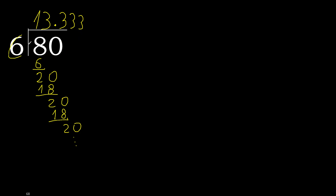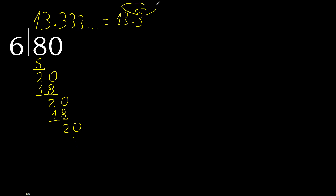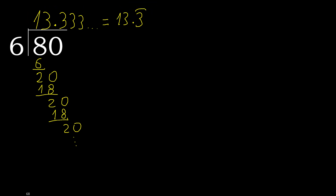So 80 divided by 6 gives us a repeating decimal. After the point, 3 repeats. We can write it like this — with a repeat notation — or like this, or like this.